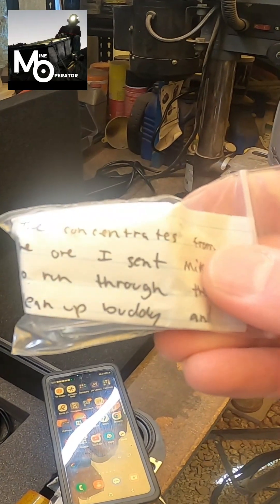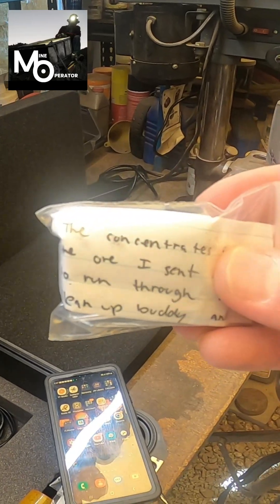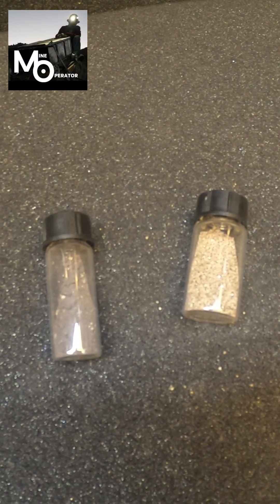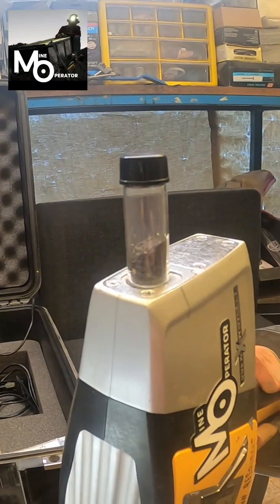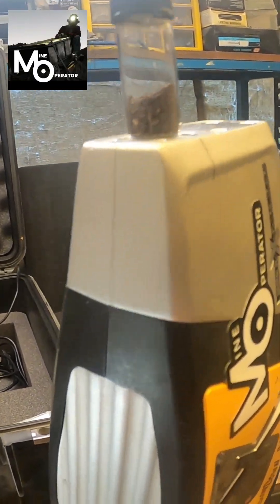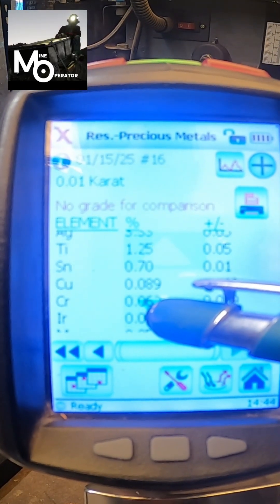The first sample up looks like some concentrates and some vials. We are going to start with the sample on the left that looks like charcoal. I will use the XRF to test this sample in both precious metals mode and soils mode.